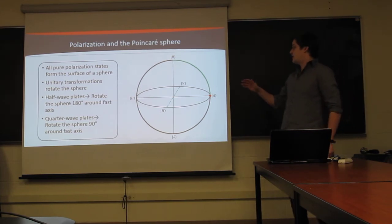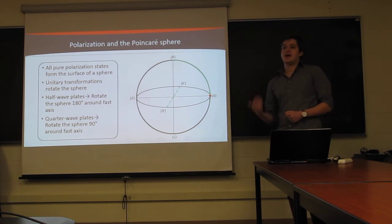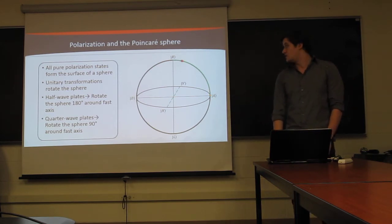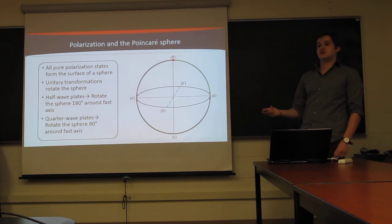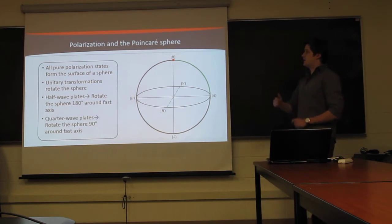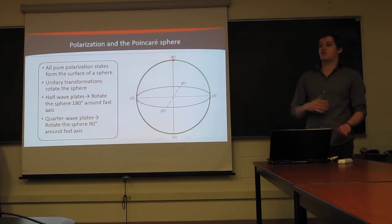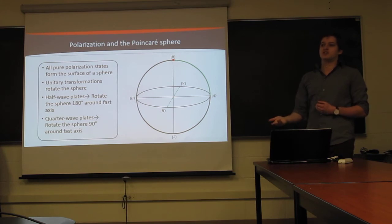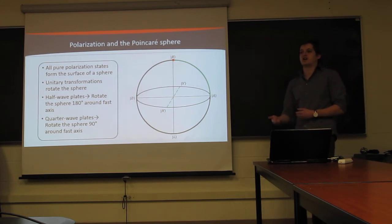Similarly, quarter-wave plates act to rotate the sphere by 90 degrees instead of 180 degrees. So if we have a quarter-wave plate with its fast and slow axis at H and V, then we can go from linear polarizations, such as anti-diagonal, and rotate it to a circular polarization. We can also convert back and forth, going from circular to linear polarization. And this is kind of the basis of how we'll be performing measurements, in which we'll rotate whatever points are given, say right-hand circularly polarized, down to the linear polarization plane. And then we can use a polarizer to project onto whatever linear polarization we want.